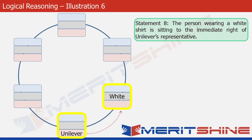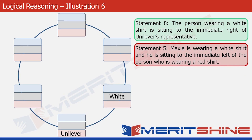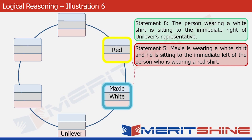The next statement we use is statement five. It says that Maxi is wearing a white shirt — we had just written white in this box, so let's put Maxi's name there as well. The statement also says that Maxi is sitting to the immediate left of the person wearing a red shirt, which means the person in red would be on the immediate right of Maxi. So we put red in that box and move forward.